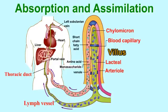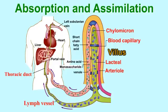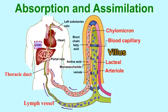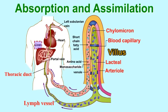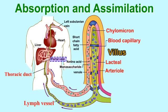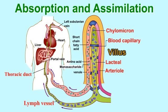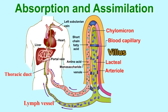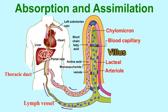From the lumen of the alimentary canal, absorbed food materials are carried to the liver through the hepatic portal vein. From the liver, materials are transported to all other regions of the body for utilization.